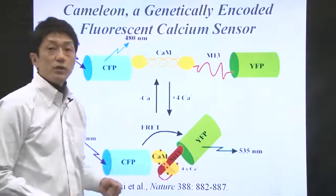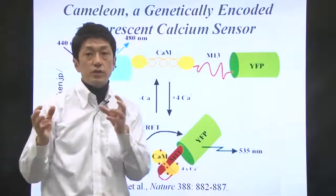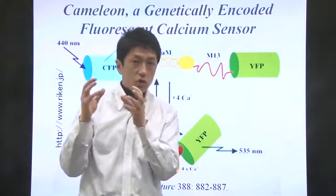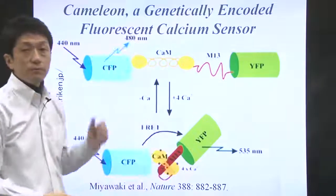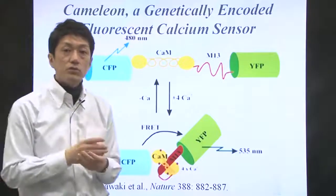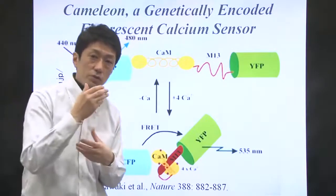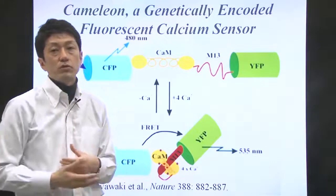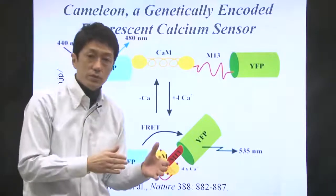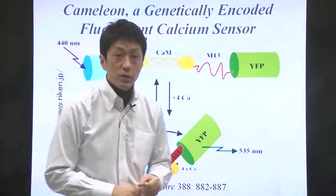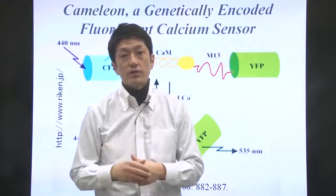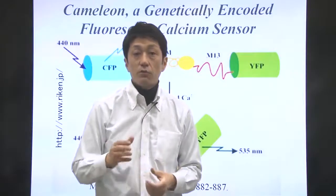The genes of these four proteins are joined linearly to make a gene for chameleon. Such fusion genes can be introduced into a variety of cells for calcium monitoring in living cells or animals. Please watch different videos showing calcium monitoring in living cells. They are really cool.